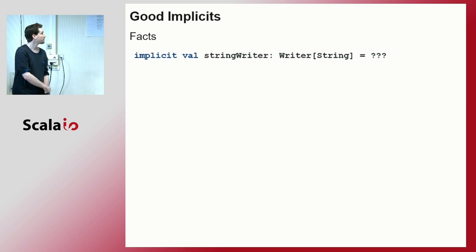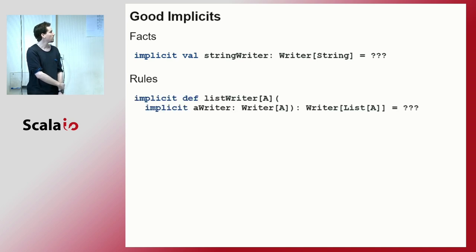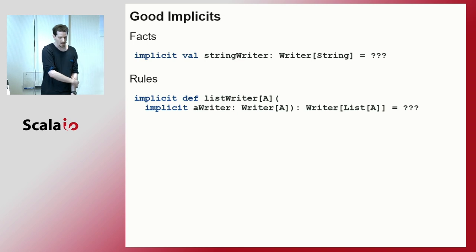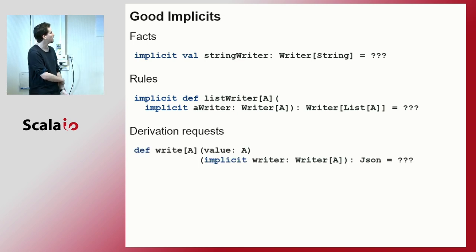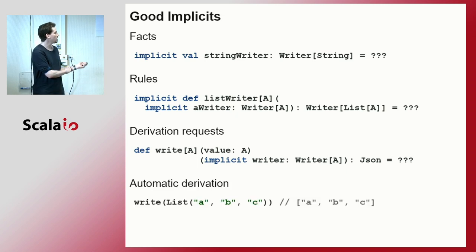Simple implicit values are what I call facts. We're telling the compiler: if ever you need a Writer of String, this is the writer for strings — use that. Next, we have what I call rules — typically a def which says: suppose you know how to write As, I'll give you a way to write a List of As. And then the derivation request says: compiler, I want to write something of type A — please generate the appropriate writer from whatever facts and rules you know. If I'm writing a List of Strings, the compiler combines the rule for lists and the fact for strings and does the right thing.